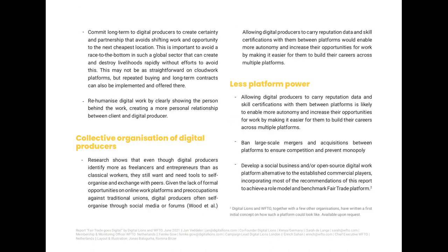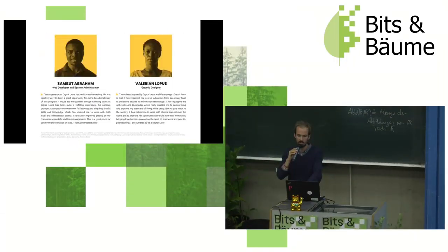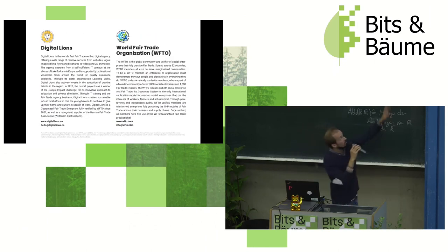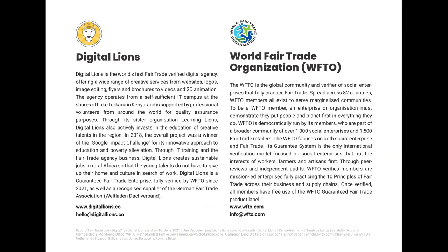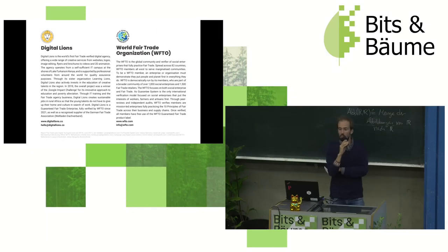Let me say a few more words on what we do at Digital Alliance so you can see our approach. We train young people in northern Kenya, around 18 to 20 years old, in web development, graphic design, and animation. We then either support them in building freelancer careers on platforms like Upwork and Fiverr, or we take them into our agency.